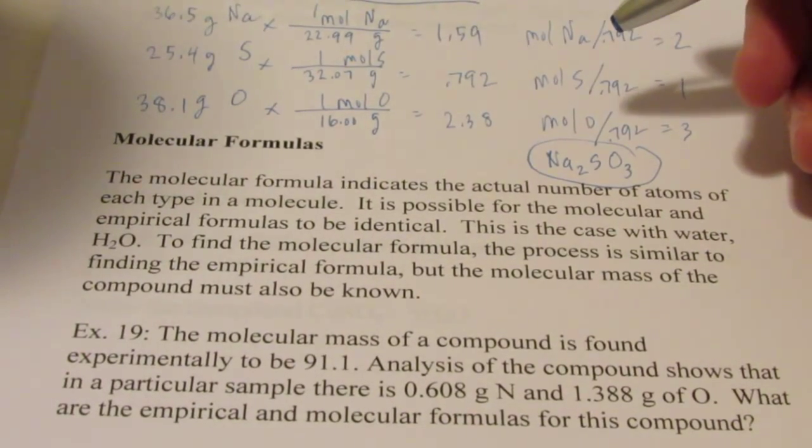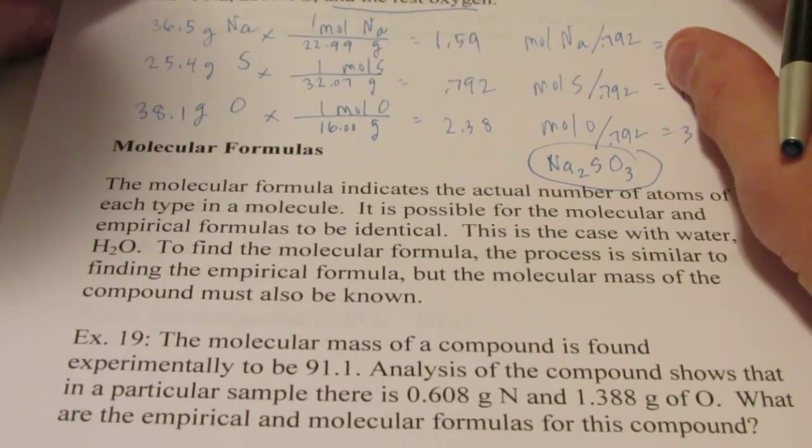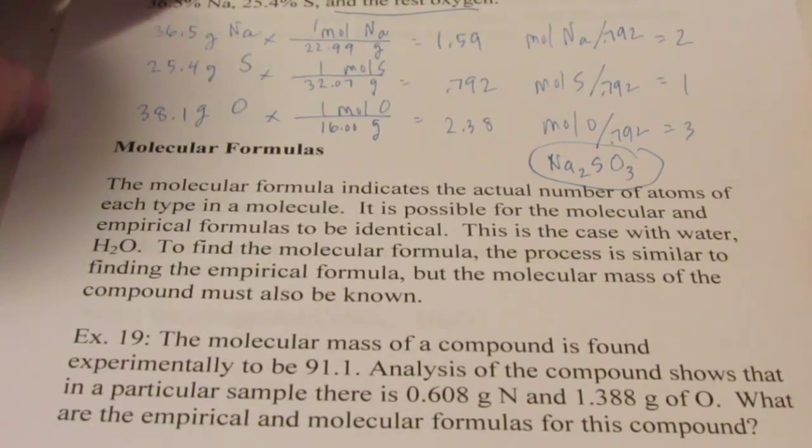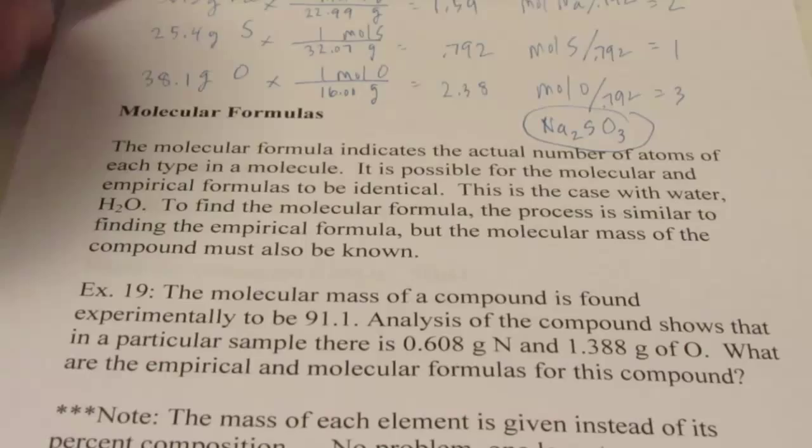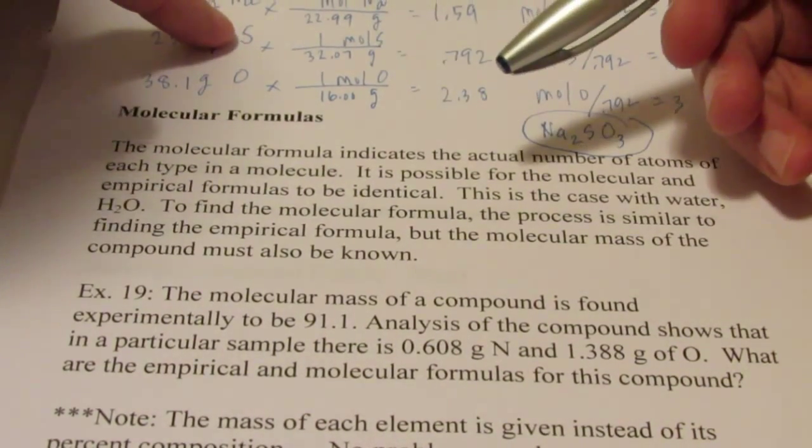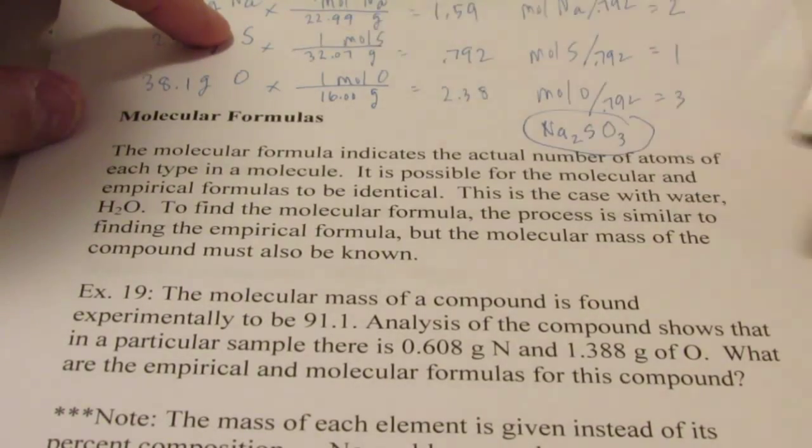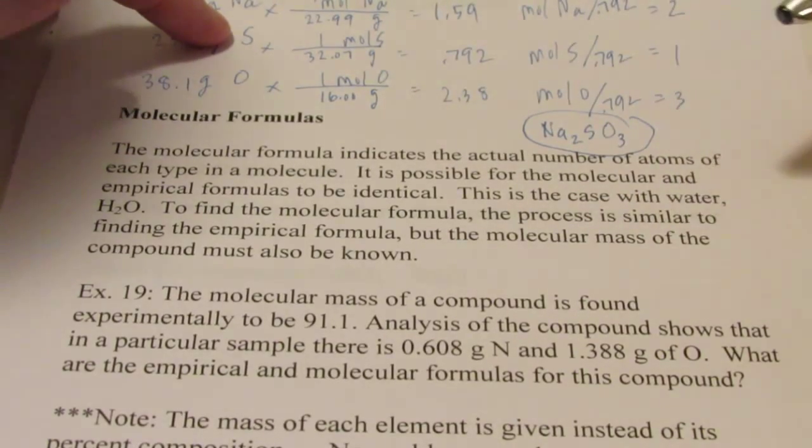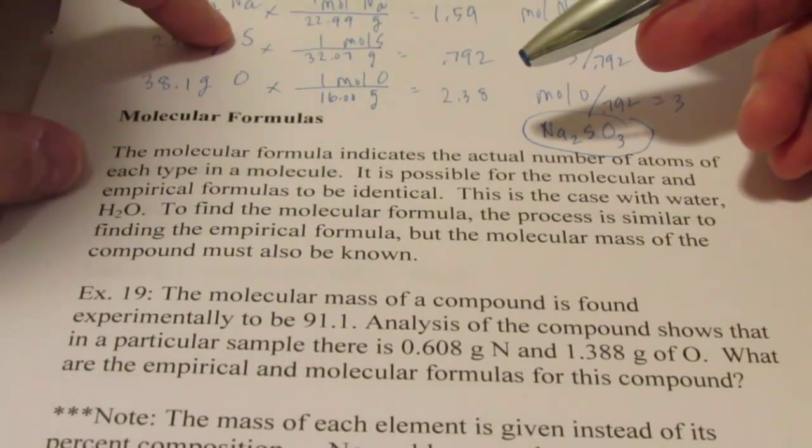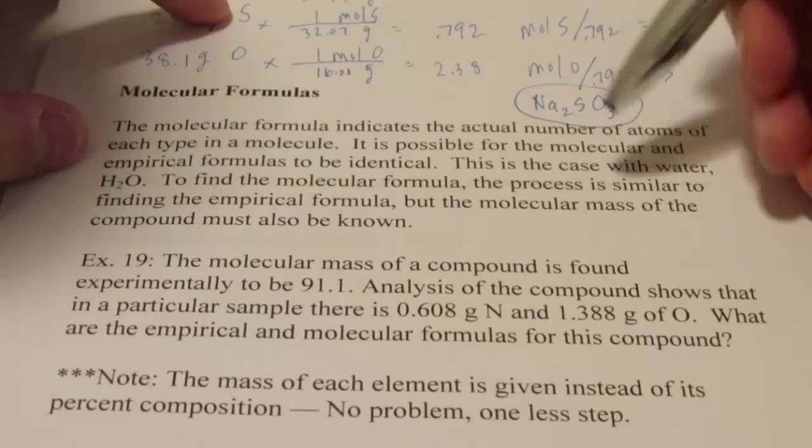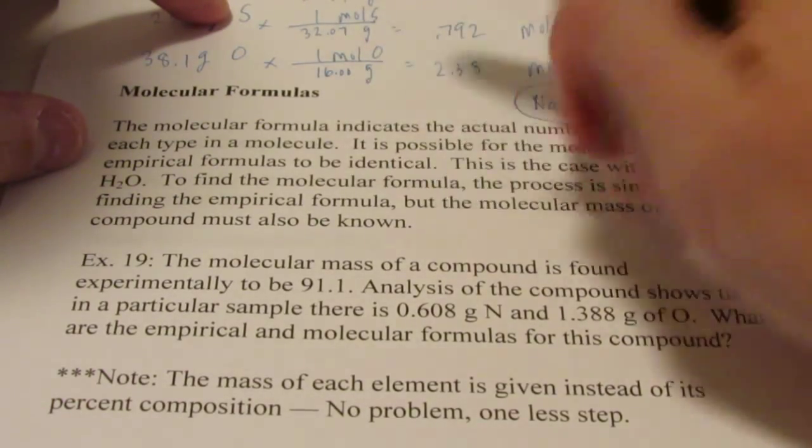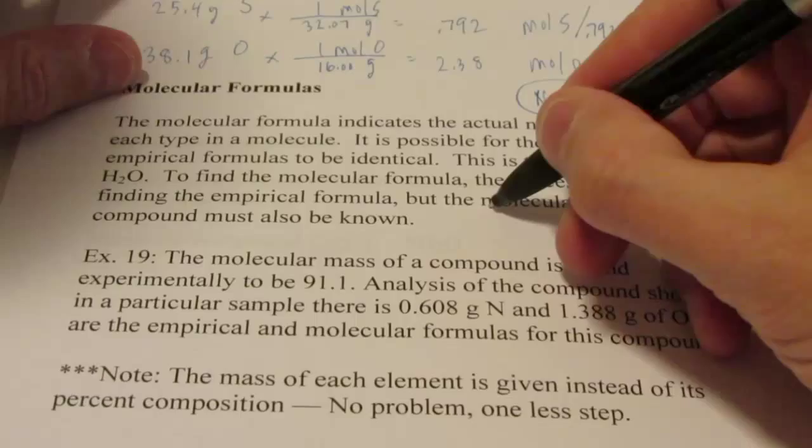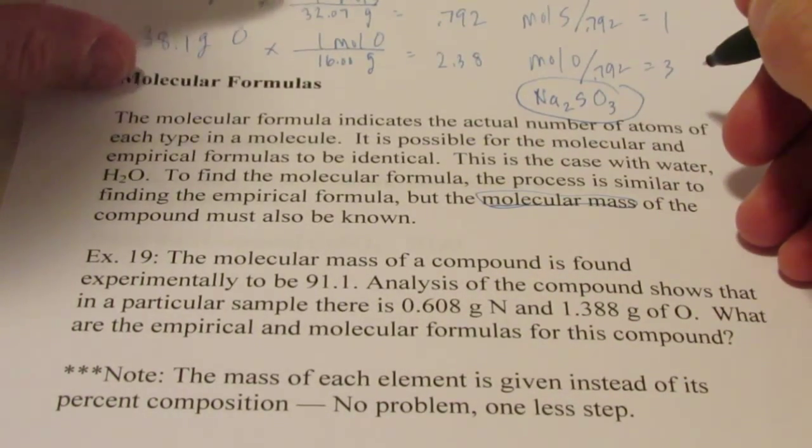Here we go folks, continuing with chemical formulas. We just did percent composition and empirical formula, and today we're going to do molecular formulas, and hopefully we'll be able to do a small amount of assignment 24 for you just to give you a little homework boost. Now molecular formula, as we said earlier, indicates the actual number of atoms in each type of molecule. It's possible for the molecular and empirical formulas to be the same.